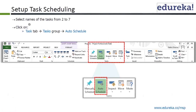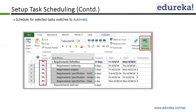Let's do it as suggested. Select names of tasks 2 to 7 and click on the task tab. In the task tab, you have the schedule group. You can click on auto schedule. Schedule for the selected task switches to automatic — let's do that and see what happens.